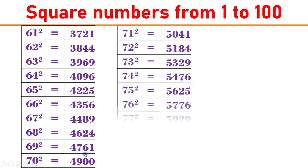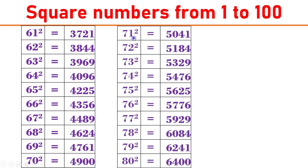71 square equals 5041. 72 square equals 5184. 73 square equals 5329. 74 square equals 5476. 75 square equals 5625.